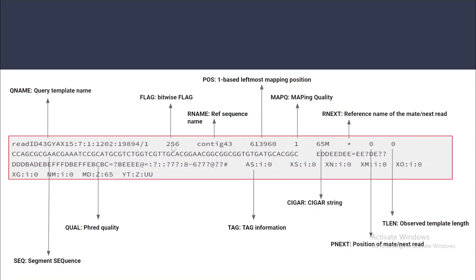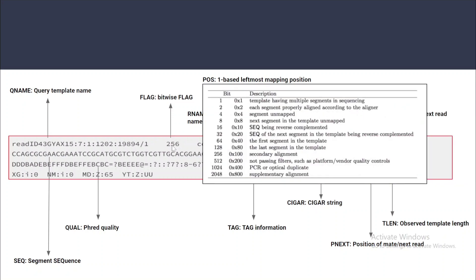The second field is the FLAG — a bitwise flag used to describe certain features about the particular read. For example, it gives an idea of whether the read is aligned, whether the read is marked as a PCR duplicate, or if its mate is aligned or not. We get these descriptions from the flag, which has the flag value and the description.